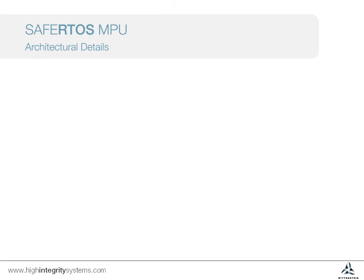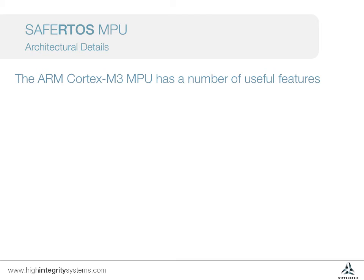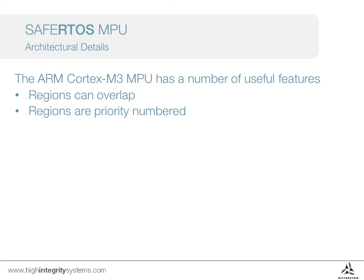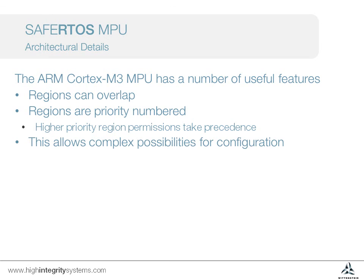The MPU in the Cortex-M3 has a number of useful features. As well as each region having a size, start address, and set of permissions, they can be used in combination — regions can overlap, and regions are priority numbered, where the higher numbered regions take precedence. This allows for many complex configuration possibilities in your application.